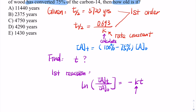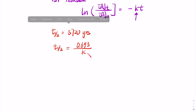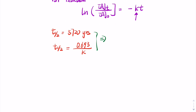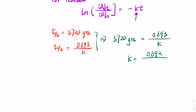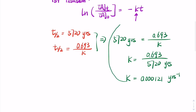We know the two pieces of given information, so we can use them for calculation. This means: 5720 years equals 0.693 divided by k, so k equals 0.693 divided by 5720 years. After doing this calculation, k equals 0.000121 years to the negative one as the unit. That's our rate constant.